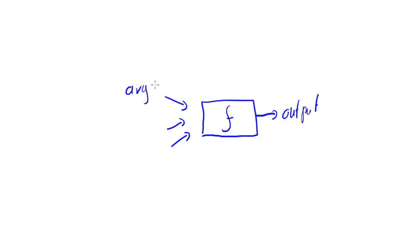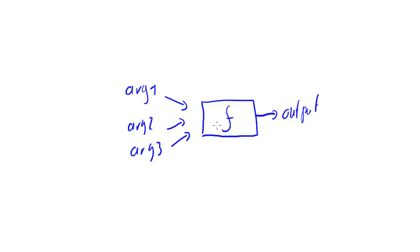For instance, this is argument one, this would be argument two, and this would be argument three. What happens inside the function we don't know, and with our level of expertise right now we don't care. Later on in the course we will build our own functions, but right now we don't care what happens inside. What's important is that we pick the right function for the job and the right arguments for that selected function.